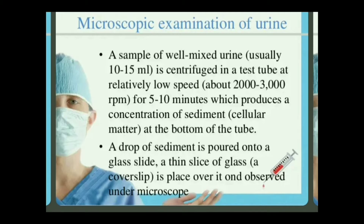A sample of well-mixed urine, usually 10 to 15 ml, is centrifuged in a centrifuge machine at relatively low speed, about 2,000 to 3,000 rotations per minute, for 5 to 10 minutes, which produces a concentration of sediment and cellular matter at the bottom of the tube.